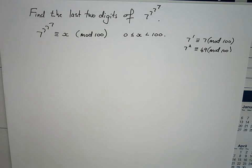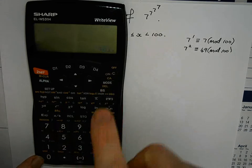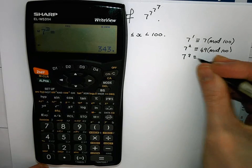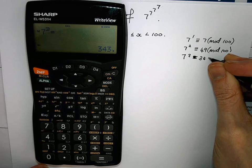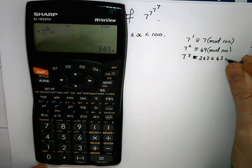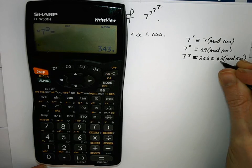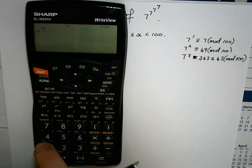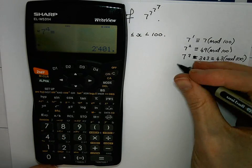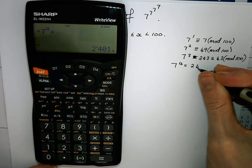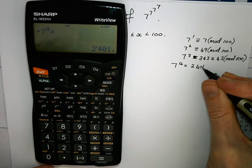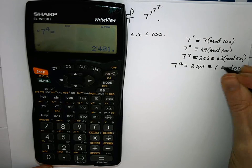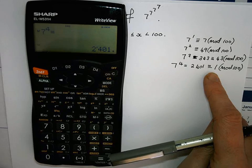7 to the power of 3 — if you don't remember that you can use your calculator — is equal to 343, which is congruent to 43 modulo 100. Then we try 7 to the power of 4, which is equal to 2,401. Now we strike the jackpot because modulo 100 this is congruent to 1. Any power of 1 is of course extremely easy to work out — it's just 1 again.